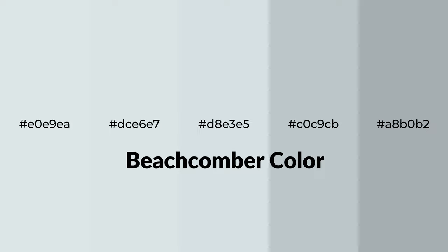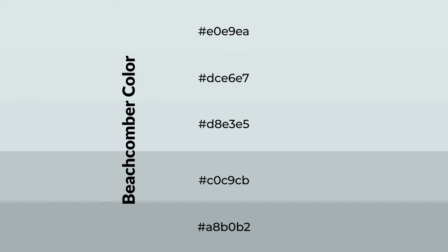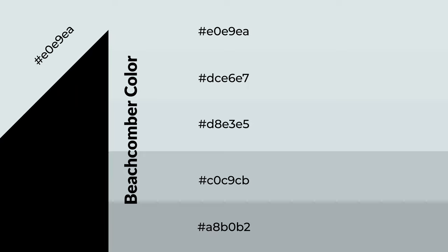Cool shades of beachcomber color with blue hue for your next project. To generate tints of a color, we add white to the color. Tints create light and exquisite emotions. To generate shades of a color, we add black to the color, and it is used in patterns, 3D effects, and layers. Shades create depth and drama.